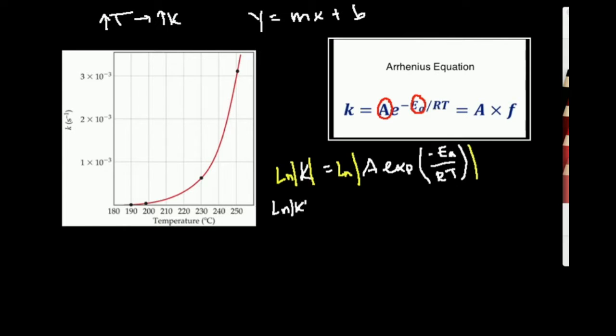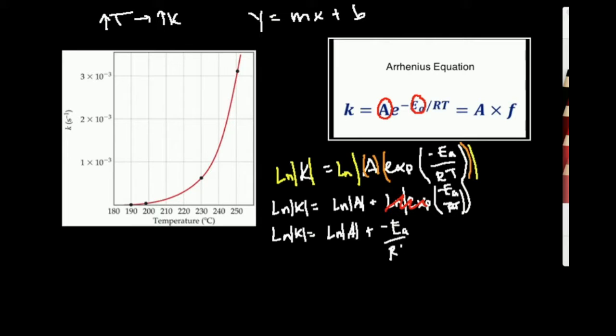So I get natural log of k is equal to, when I have the natural log, I'm going to group it like this, this is one part and this is a second over here. Whenever I do this, I'm going to have the natural log of A, but it's going to be plus, because these are log laws, plus the natural log of the exponential of negative activation energy over RT. Of course, we know that natural log undoes the exponential function, so I'm left with natural log of the rate constant equals natural log of A plus negative activation energy over RT.